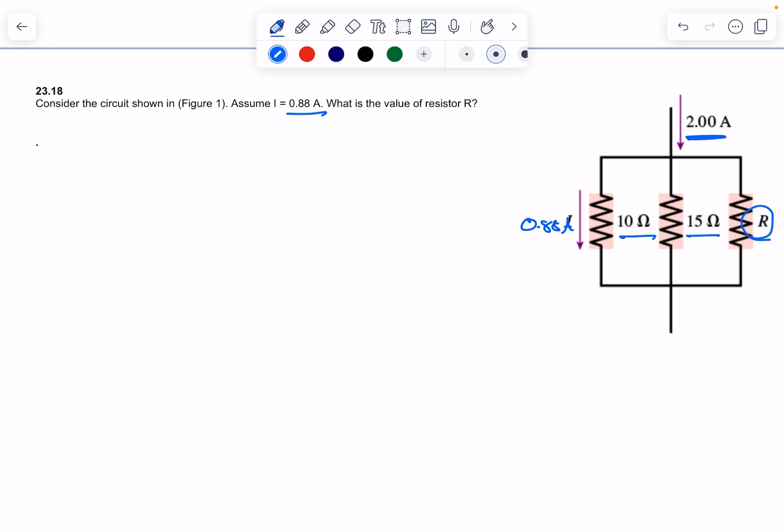But we know the total current is 2 amps, right? And so if we know the total current is 2 amps, let's think this through.